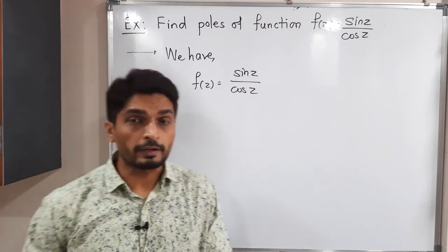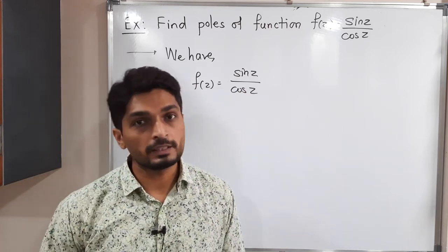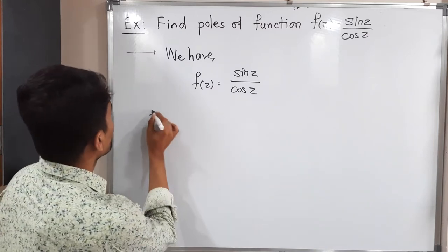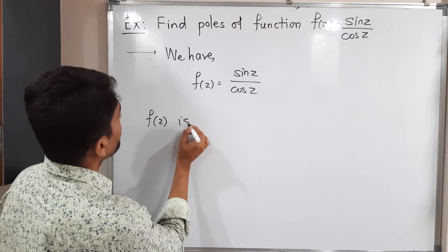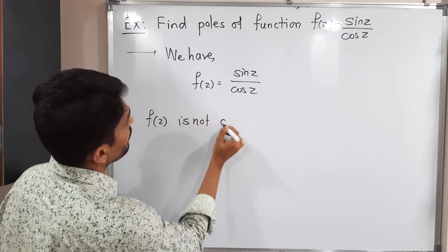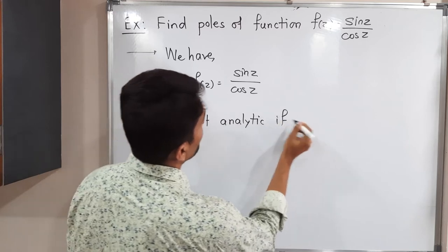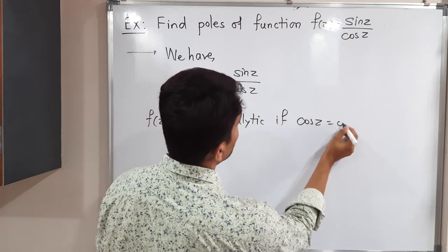We have to find where the denominator of the function will be zero. The denominator is cos z. Let me mention: f(z) is not analytic if cos z equals zero.